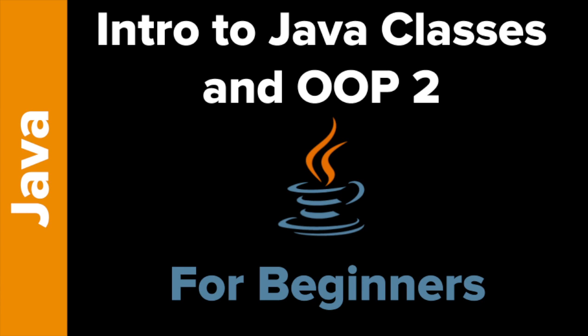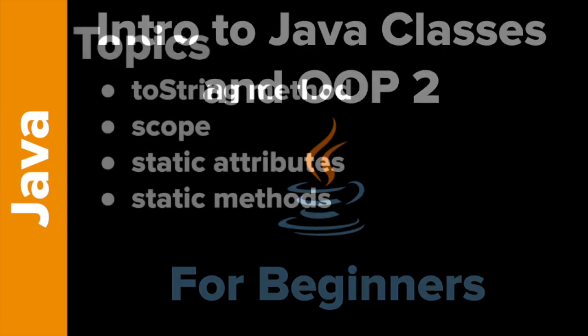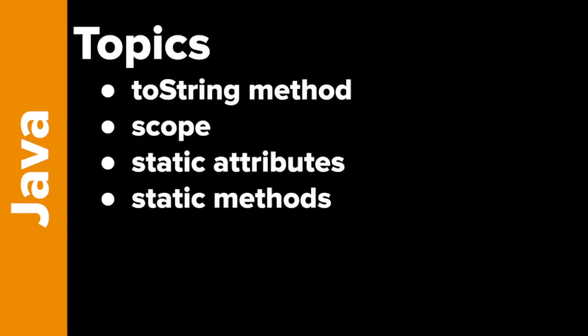Welcome to Intro to Java Classes in OOP Part 2 for Beginners. This is a continuation of Part 1, so if you haven't seen that, please go back and watch that first. The coding concepts we're going to cover today are the toString method, Scope, Static Attributes, and Static Methods.